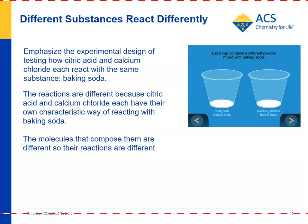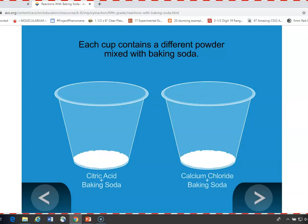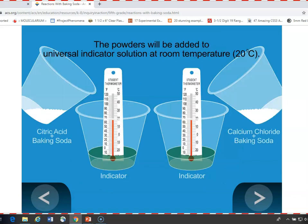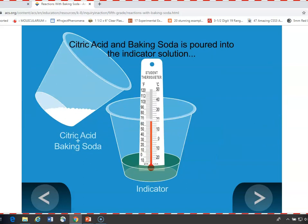We can take a look at these reactions using an animation. The animation shows our source cups of citric acid and baking soda, and calcium chloride and baking soda. It also shows two samples of indicator solution with a thermometer in each one starting at about 20 degrees. We're going to add the citric acid and baking soda to one and the calcium chloride and baking soda to the other.